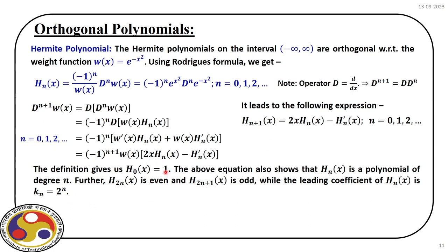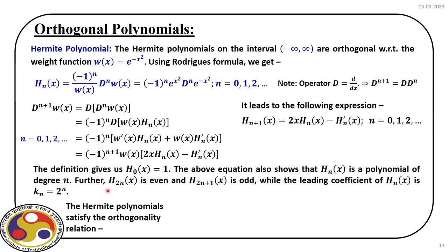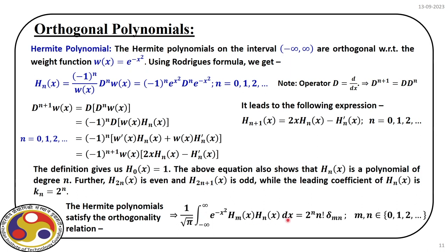Again we start Hₙ(x) with H0(x) = 1, and Hₙ(x) is a polynomial of degree n. H₂ₙ(x) is an even function and H₂ₙ₊₁(x) is an odd function. The leading coefficient of Hₙ(x) is 2ⁿ. Hermite polynomials satisfy orthogonality conditions, and the most important relation to note is this three-term recurrence relation.